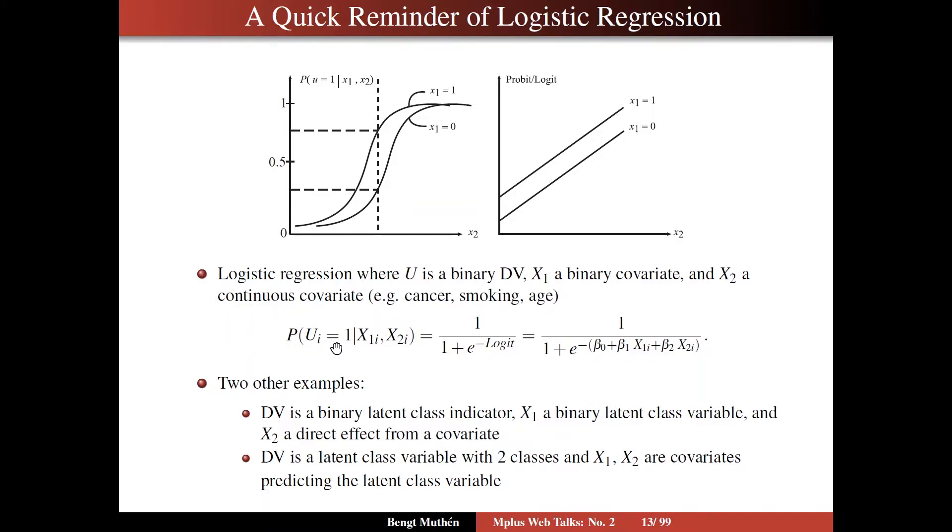To get this S-shaped curve, we write the probability of U equals 1 having the cancer as a function of the x values for individual i as this logit function. This is something you can actually compute on any calculator. The logit is this linear expression with an intercept beta 0, slope beta 1, and slope beta 2. What's in parenthesis here is called the logit. That's linear. You have drawn that picture in the top right corner here.